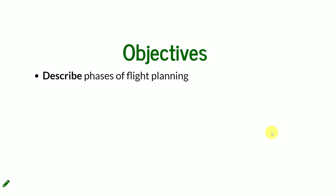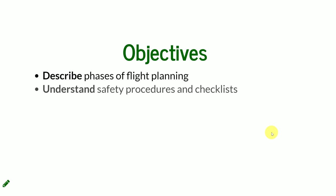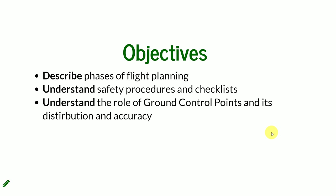The objectives for today's lecture and assignment: we're going to describe all phases of flight planning. I'm going to stress an understanding of safety procedures and checklists to ensure that not only we collect the best possible data, but our flight will be executed safely for both the UAS and people around. I'm going to go more into depth on the role of the ground control point so you can understand how their distribution and accuracy can influence the data after processing.